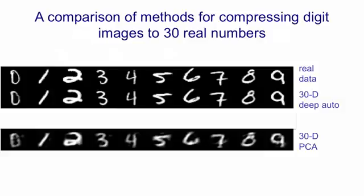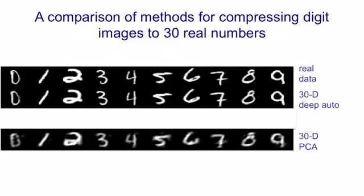If you look at the first row, that's one random sample from each digit class. If you look at the second row, that's the reconstruction of the random sample by the deep autoencoder that uses 30 linear hidden units in its central layer. So the data has been compressed to 30 real numbers and then reconstructed. If you look at the 8, you can see that the reconstruction is actually better than the data — it's got rid of the little defect in the 8 because it doesn't have the capacity to encode it. If you compare that with linear principal components analysis, you can see it's much better. A linear mapping to 30 real numbers cannot do nearly as good a job of representing the data.